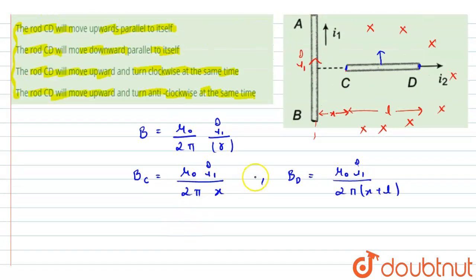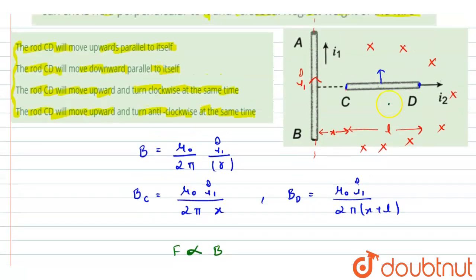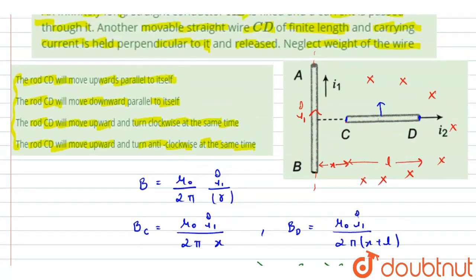We know that the force acting on the conductor is proportional to the magnetic field. Since the distance X is less than X plus L, the magnetic field at point C is greater than the magnetic field at point D. Therefore, the force acting on the portion near C is greater in magnitude, while the force acting on the portion near D is lesser in magnitude.